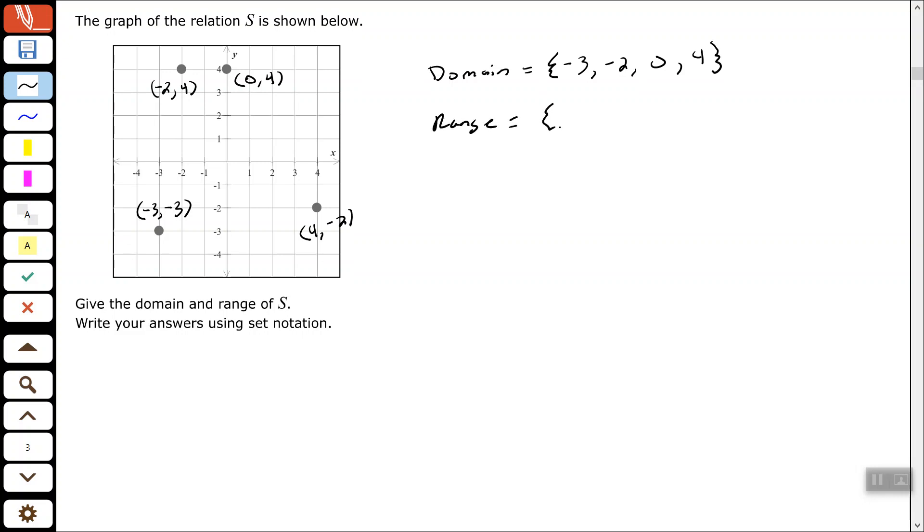So the y values, we have negative three, negative two, four, and the four is listed twice. But remember, we only have to show it once when we're listing our range out like that.